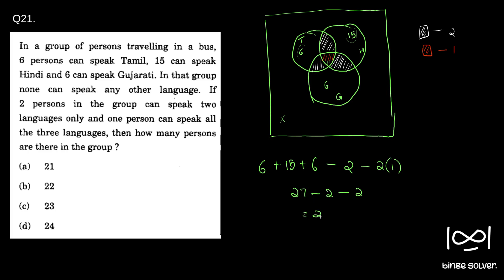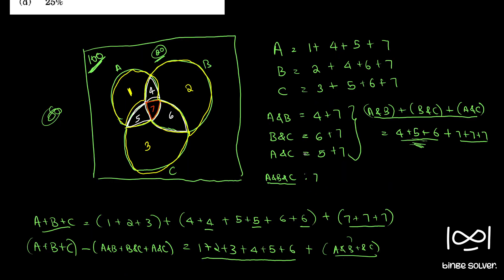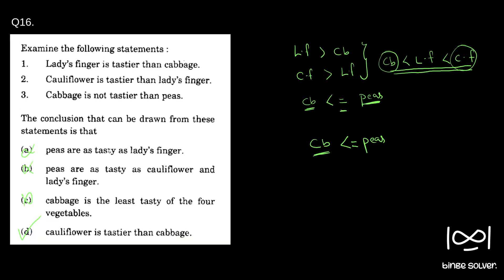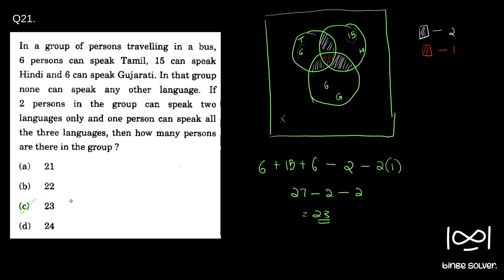The answer is 23, which is option C. If you have doubts about the double counting — why the white region is subtracted once and the red region is subtracted two times — you can refer to question 15, where I discussed this concept in detail and showed why the white regions appear twice and why the center region appears three times. The solution to question 21 is C, which is 23.